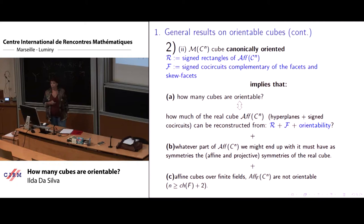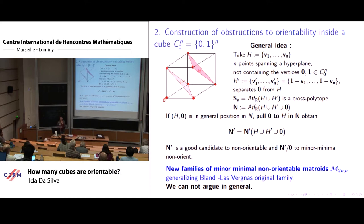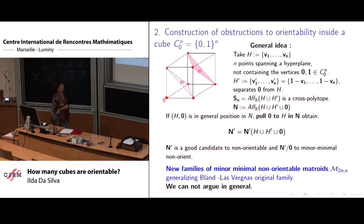On general results, these are the general results. Then the second aspect, the second direction we looked for was to find out obstructions to orientability inside the cube. We manage actually to have a general idea how to build families of new, minor minimal non-oriented matroids, getting the general idea generalizing existing ones.